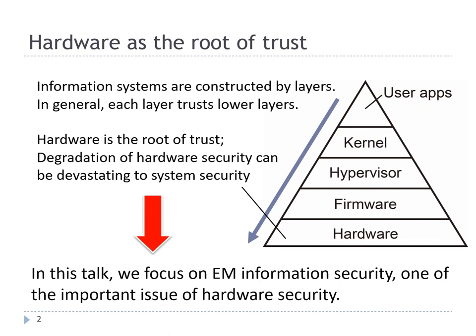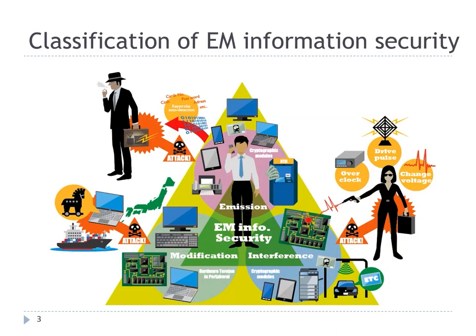This talk focuses on EM information security, one of the important issues of hardware security. Threats to hardware are roughly classified into three categories: emission, interference, and modification. By protecting devices from these threats, we can improve reliability. I will now explain each threat.